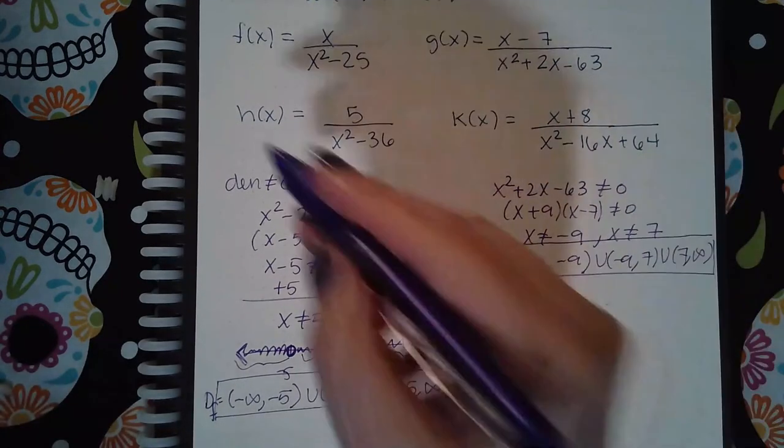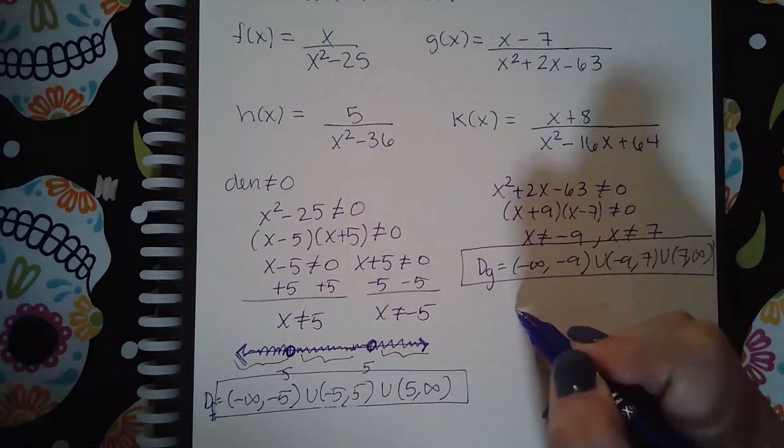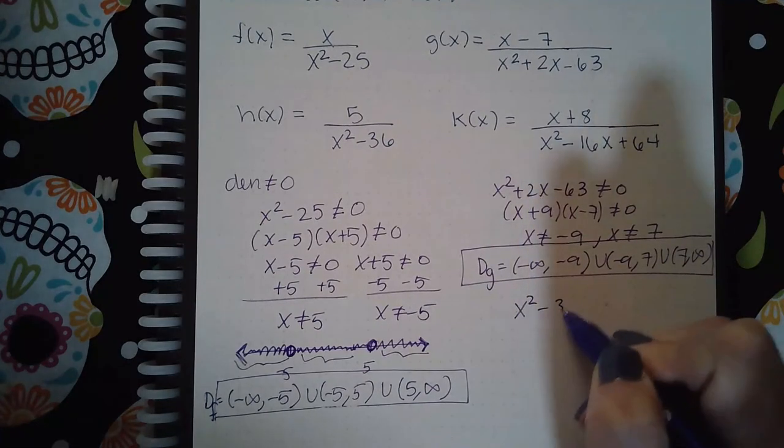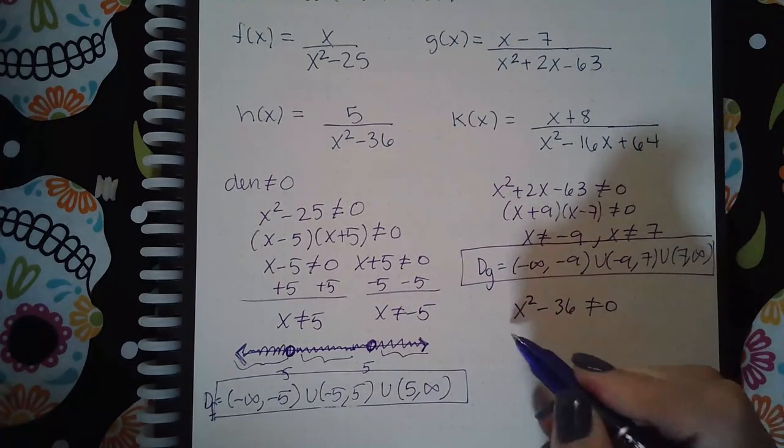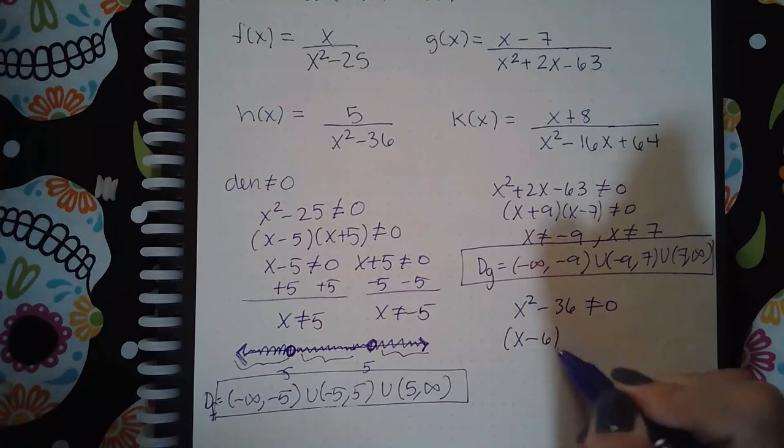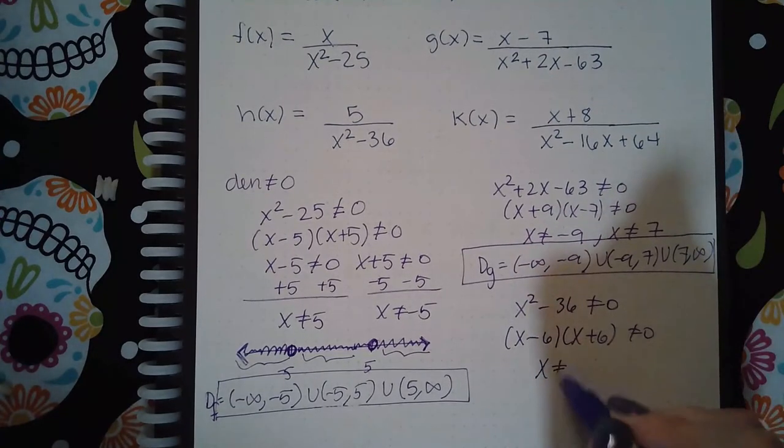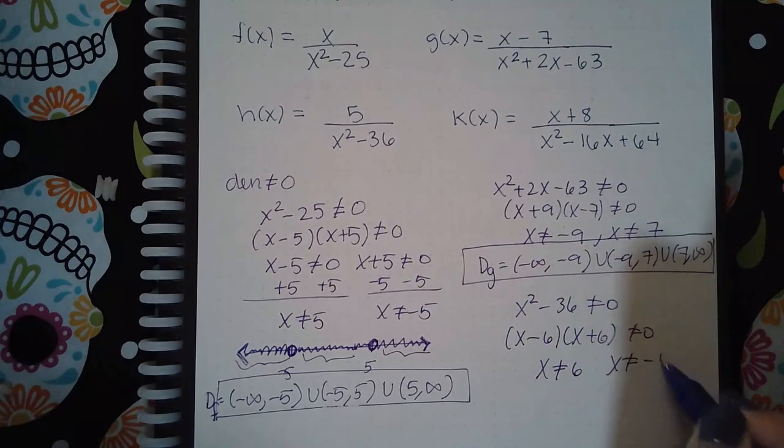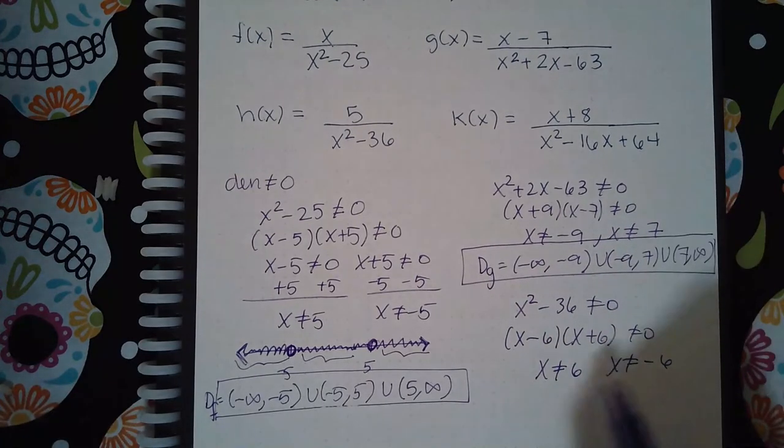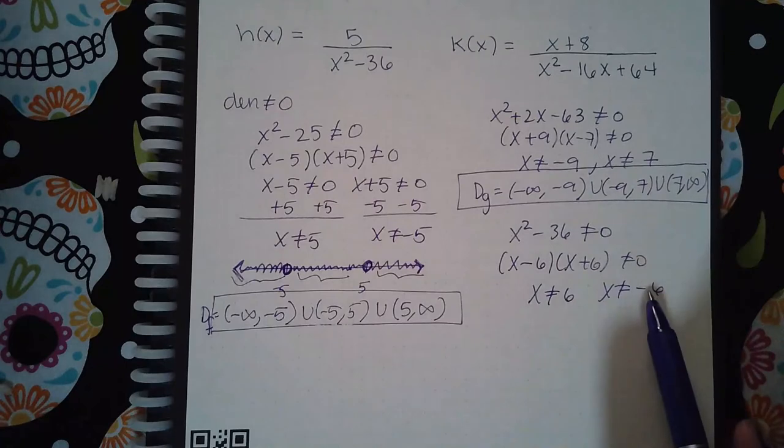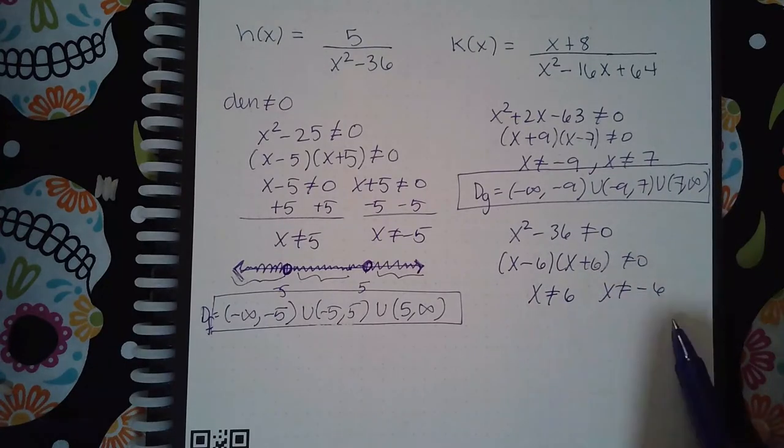Now let's look at h. So we say that this denominator cannot equal zero. So I get x minus six, x plus six cannot equal zero. So x cannot equal six, and x cannot equal negative six. But on a number line, the negative six comes first, and then the positive six, right?